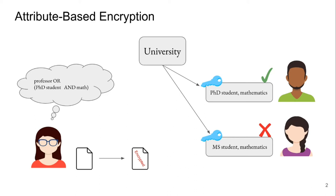In attribute-based encryption we also want to forbid collusion. For example, if the second student has a friend who is a PhD student in chemistry, even though these two keys individually have attributes which could potentially satisfy this policy, it should be impossible to combine both keys and decrypt.